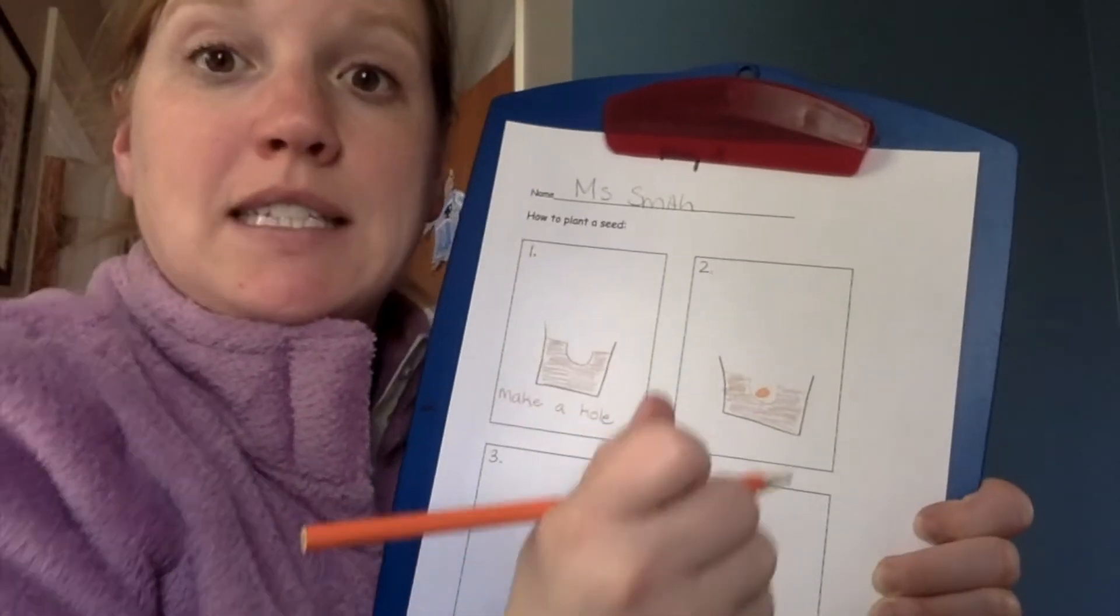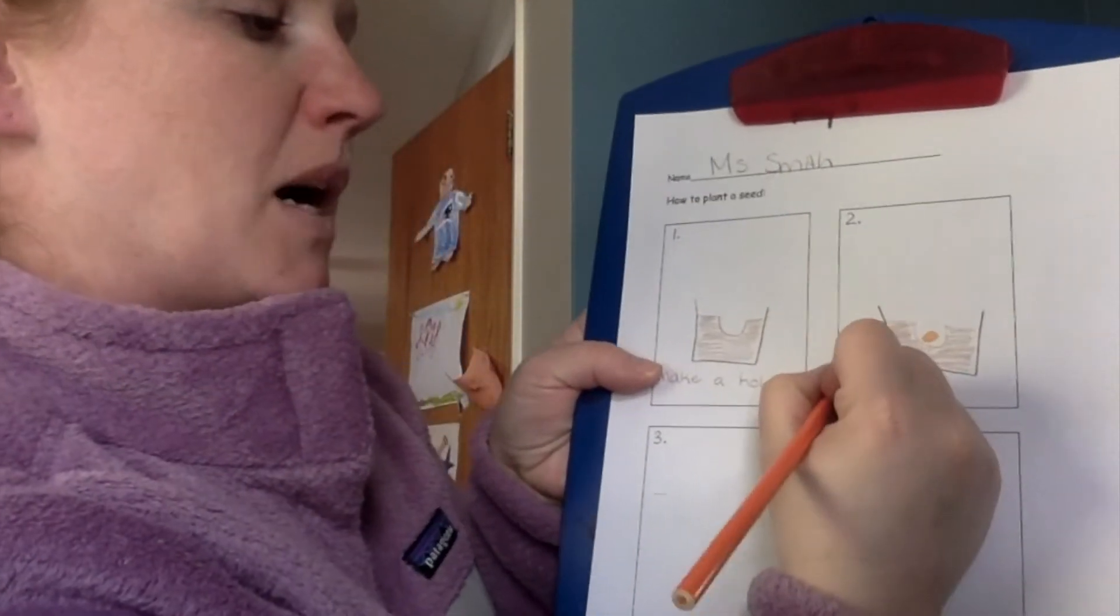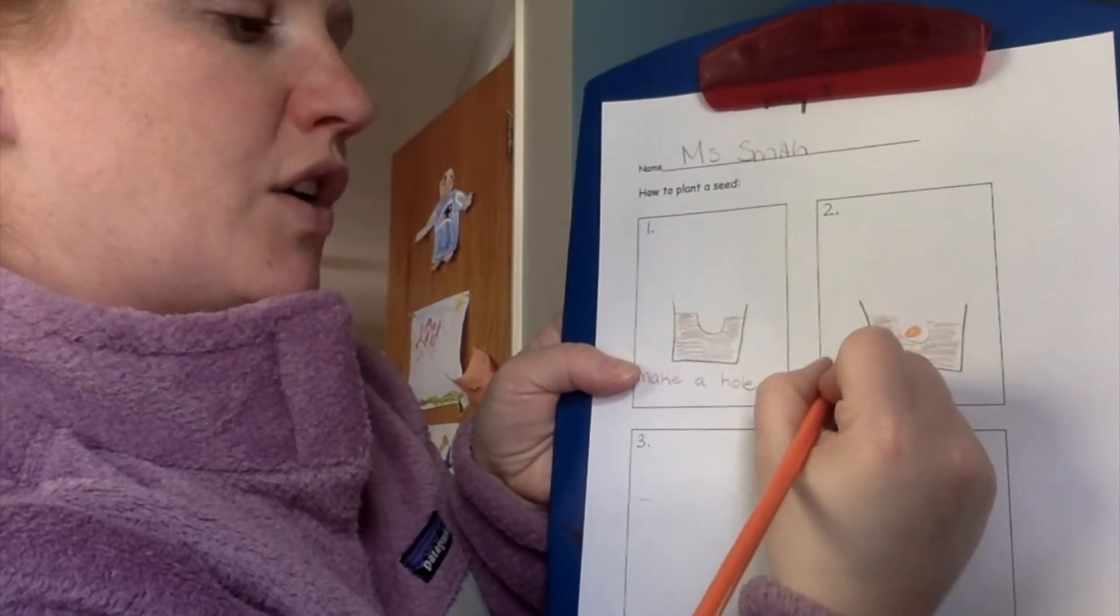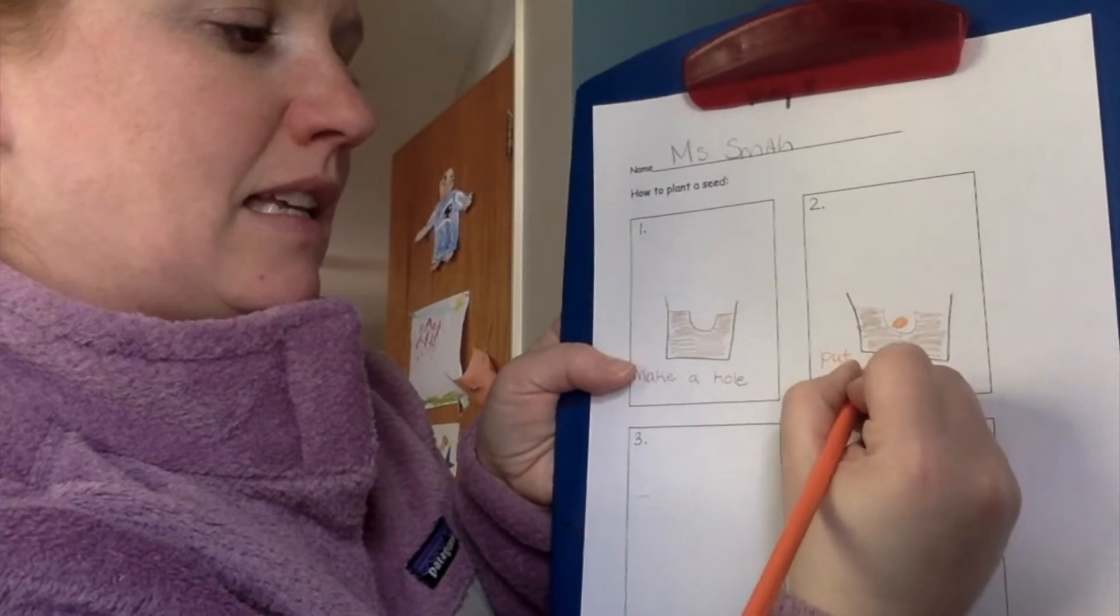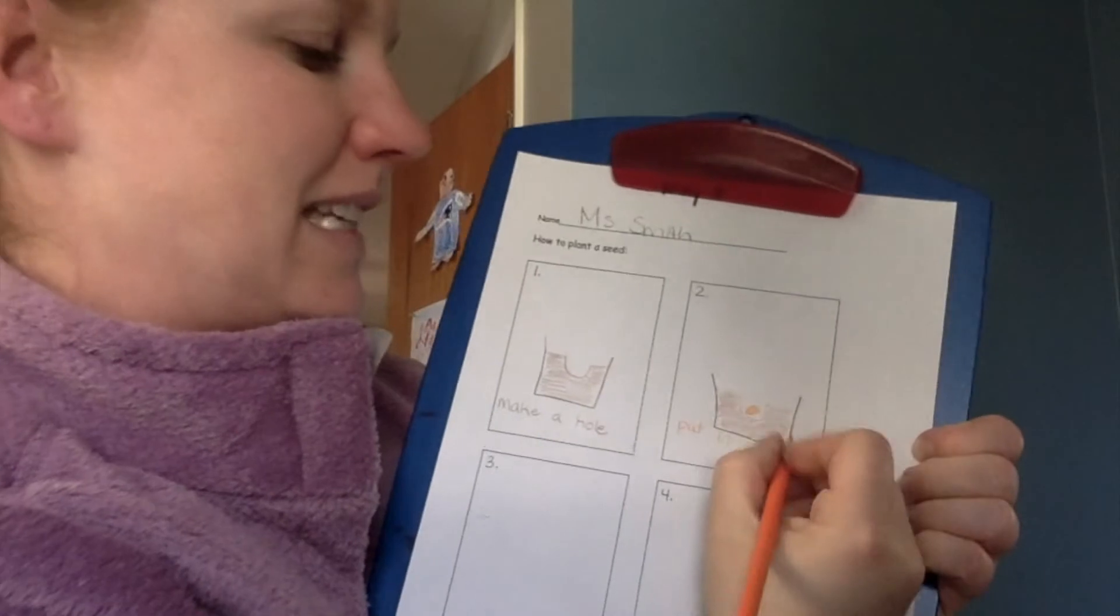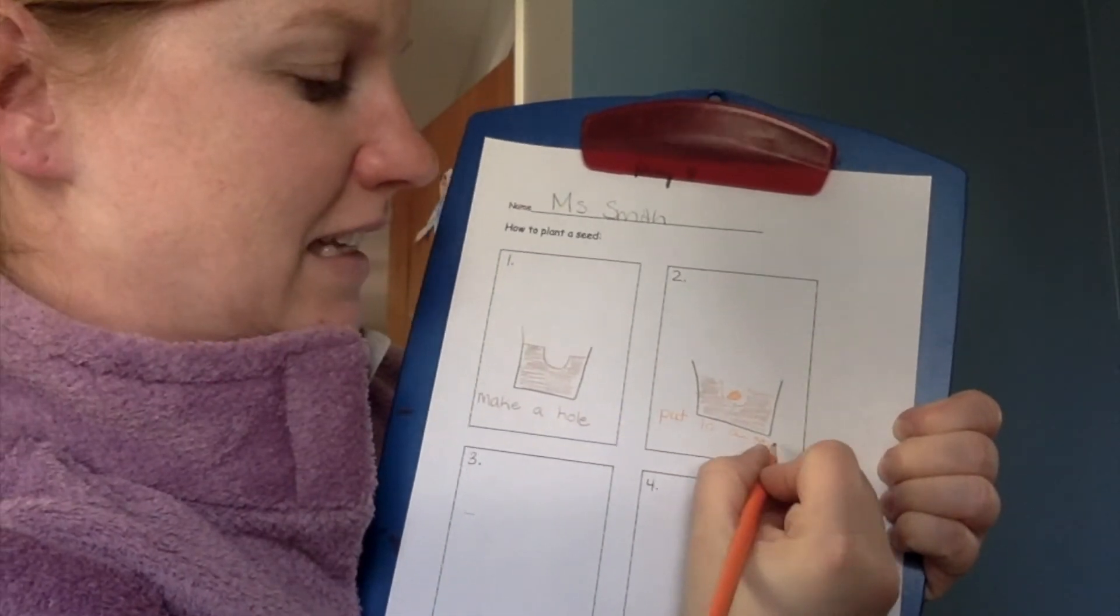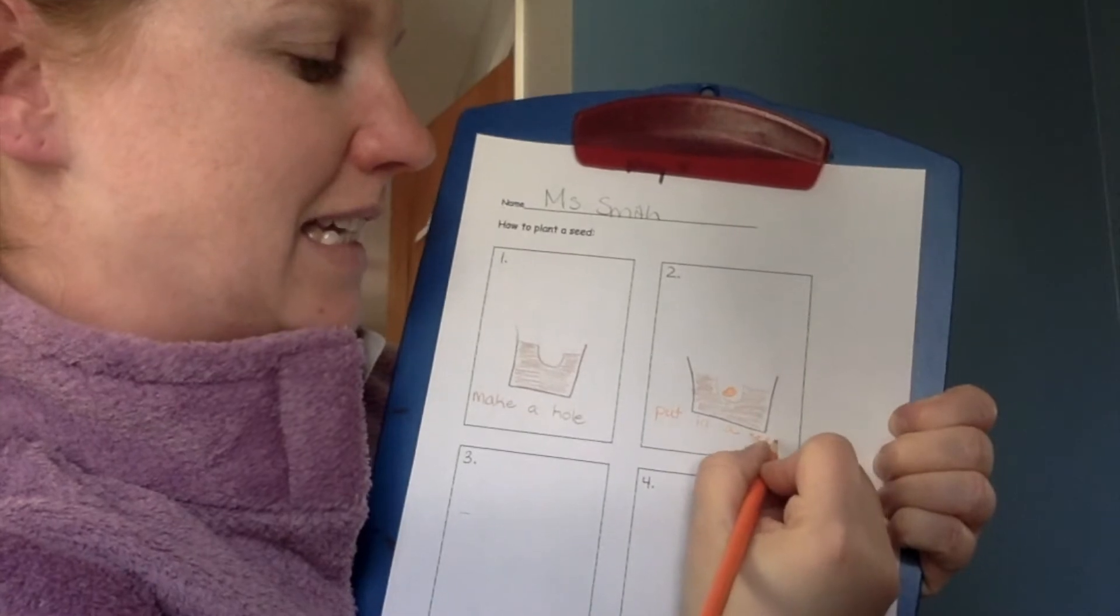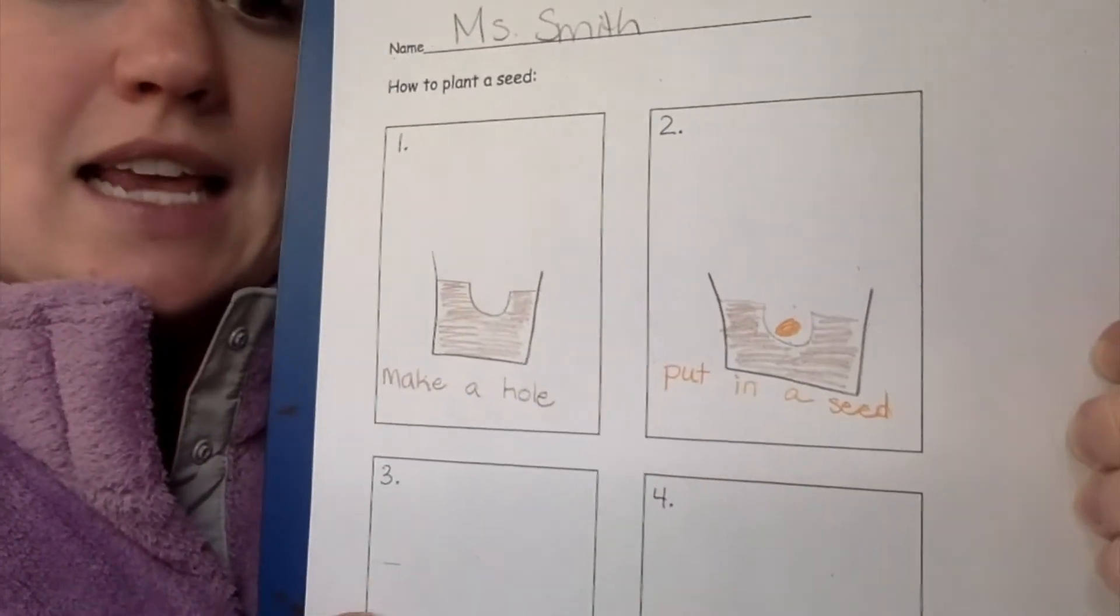Then I'm going to write the word put in a seed. Put. P. U. It's actually the U. Put. In. White word. A. Seed. S. E. E. And there's two E's. Seed. D. Put in a seed.